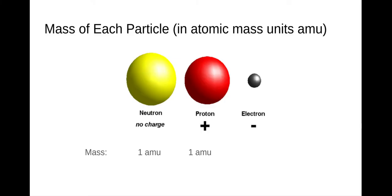The mass of a neutron we consider 1 AMU and the mass of a proton we also consider 1 AMU — and as you can see, they're about the same size. Electrons are really small and we consider them having a mass of 0 AMUs. So neutrons and protons each weigh 1 and electrons weigh 0.